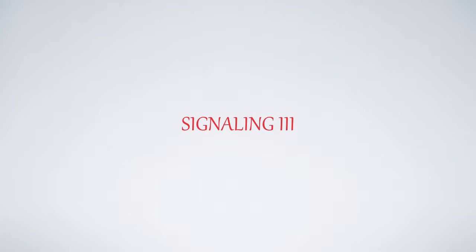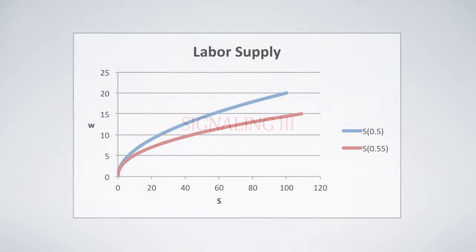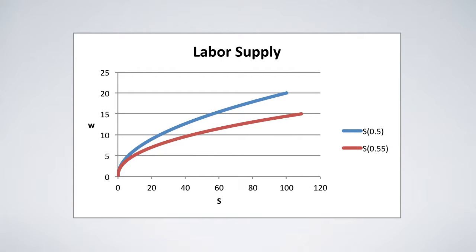This video rescues Spence's signaling theory. These are the labor supply curves. The vertical axis measures wage income, the horizontal one measures labor or schooling.